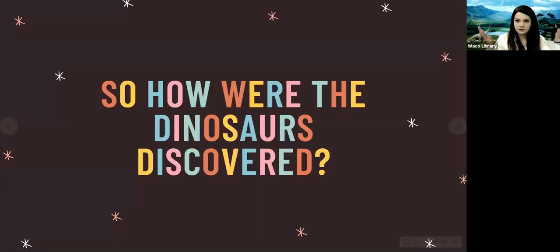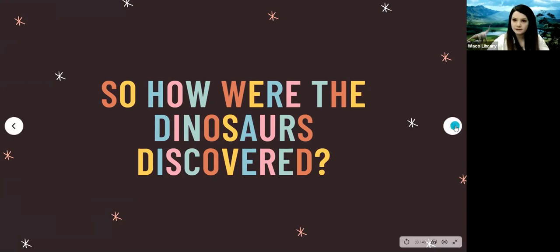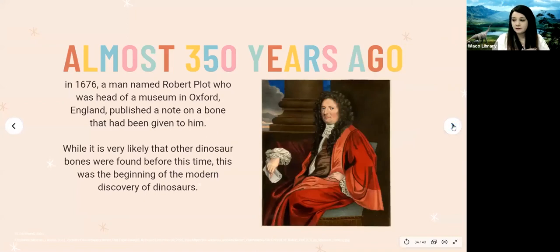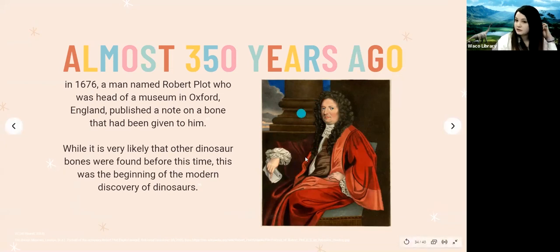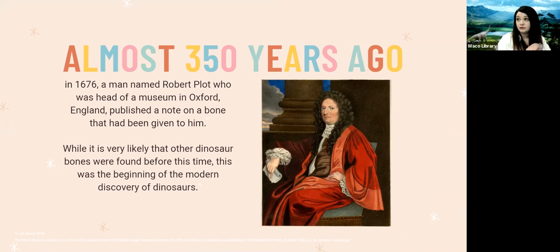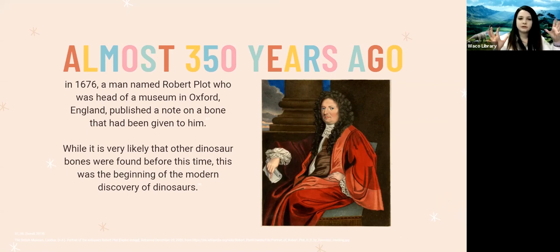So dinosaurs went extinct — how were they discovered? About 350 years ago, in 1676, a man named Robert Plot, head of a museum in Oxford, England, published a note on a bone that had been given to him. It turns out this was the very first recorded discovery of a dinosaur. While there were likely dinosaur bones found before this time, this is considered the first modern discovery.